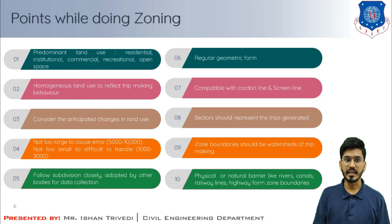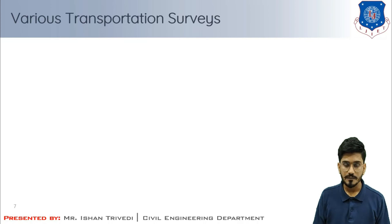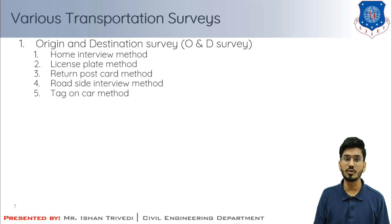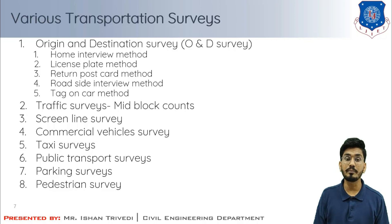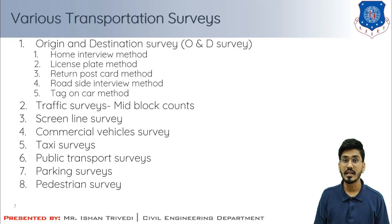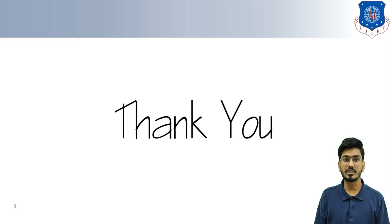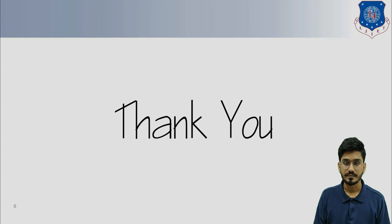Finally, there are various types of transportation surveys. These include the Origin and Destination (OD) survey, classified as: home interview method, license plate method, written postcard method, roadside interview method, and tag-on-car method. There are also traffic surveys at mid-block count, screen line survey, commercial vehicle survey, taxi survey, public transport survey, parking survey, and pedestrian survey. These surveys will be studied in the next lectures. I hope you have learned about zoning, basic movements in transportation surveys, and the introduction to various types of surveys. Thanks for watching.